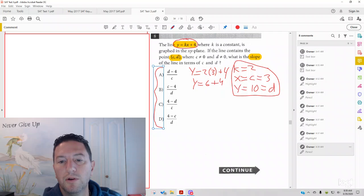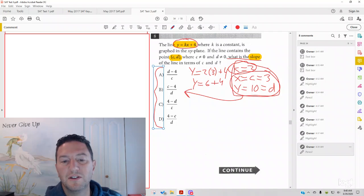That's the important thing. Since it's asking for what is the slope, that's the question. Well, your slope, like we said before, is k. And k equals 2. So what we're going to do is, when we go to our answer choices, in place of c, we're going to put 3. In place of d, we're going to put 10. And we're going to see what gives us 2.